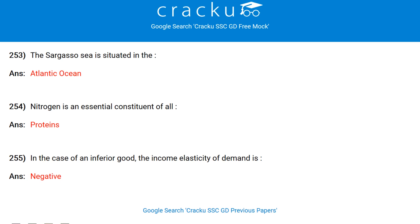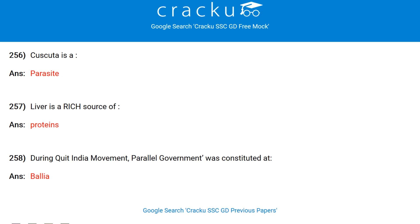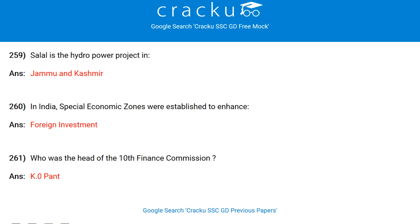Who discovered the electromagnetic nature of light? Maxwell. The Sargasso Sea is situated in the Atlantic Ocean. Nitrogen is an essential constituent of all proteins. In the case of an inferior good, the income elasticity of demand is negative. Kaskuta is a parasite. Liver is a rich source of protein. During the Quit India Movement, a parallel government was constituted at Ballia. Salal is a hydropower project in Jammu and Kashmir. In India, special economic zones are established to enhance foreign investment.